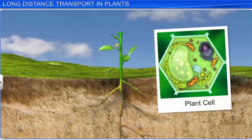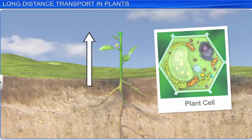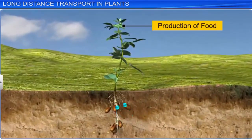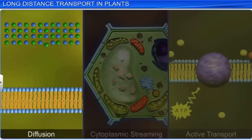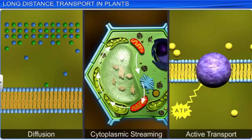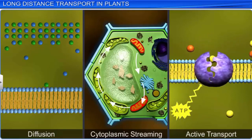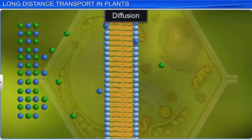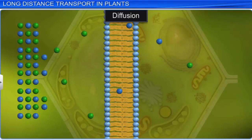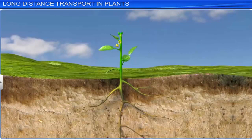Substances often need to be transported across both short and long distances inside plants. Sometimes the site of production of food or absorption of water may be quite far from the plant's storage organs. In such cases, means of transport such as diffusion and cytoplasmic streaming supplemented by active transport do not suffice — they can only account for short distance movements. Moreover, diffusion is a painfully slow process, which might take years to transport substances over a distance of one meter in a plant. Therefore, a special long distance transport system called a mass or bulk flow system exists in plants to transport water, minerals, and food.